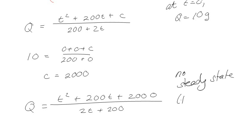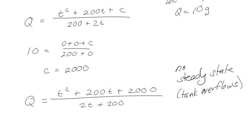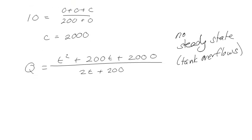The tank overflows, so there is no steady state. This is interesting — after showing you everything that follows a pattern, now I'm showing you something that doesn't. The total quantity of salt at any time until it overflows is represented by Q = (t² + 200t + 2000)/(200 + 2t). The concentration equals Q divided by the amount of water in the tank, which is 200 + 2t. Pretty good — learning all kinds of stuff. Hope you had fun!